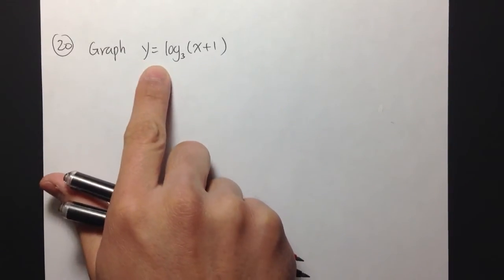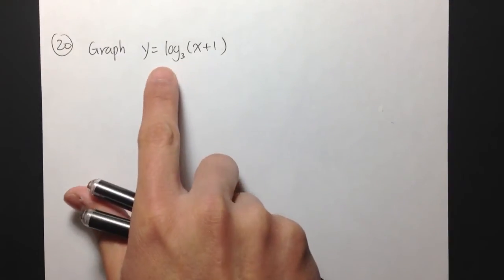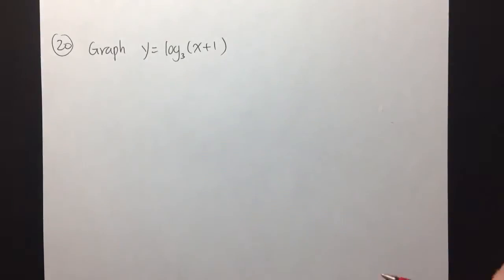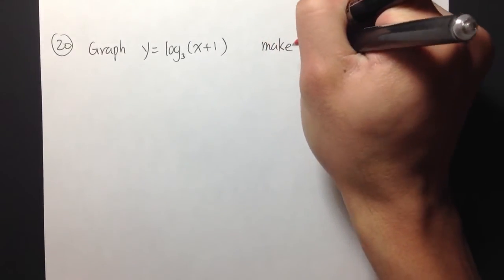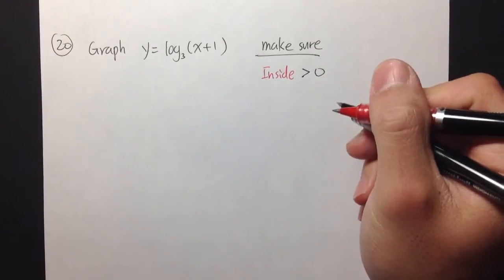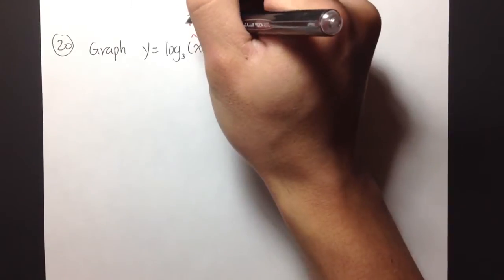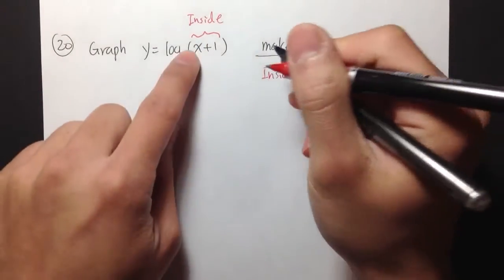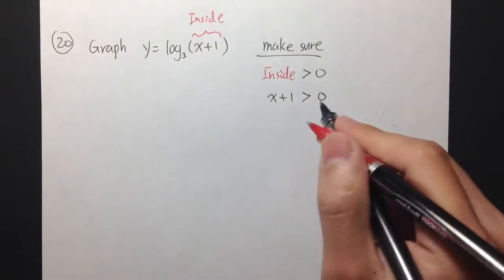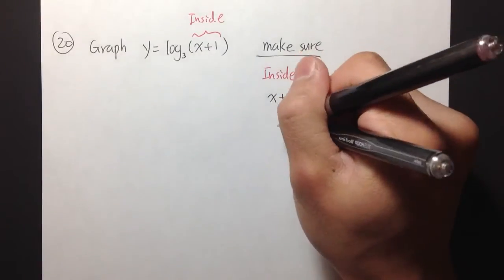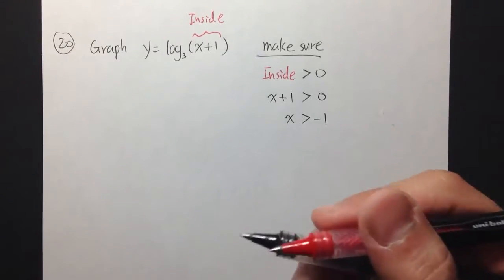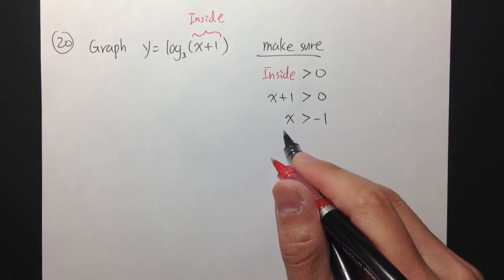For question number 20, we are going to graph y equals log base 3 of x plus 1. Because we can only take the log of a positive number, the first thing we need to do is make sure the inside turns out to be positive — bigger than 0. In this case, the inside is x plus 1, so x plus 1 must be greater than 0, which means x is greater than negative 1. When we create a table, we need to choose numbers bigger than negative 1.